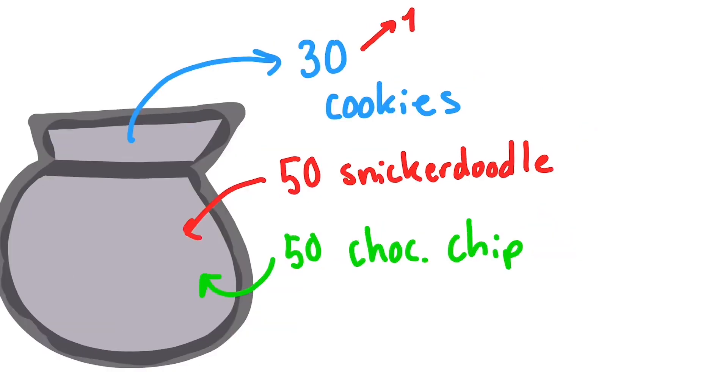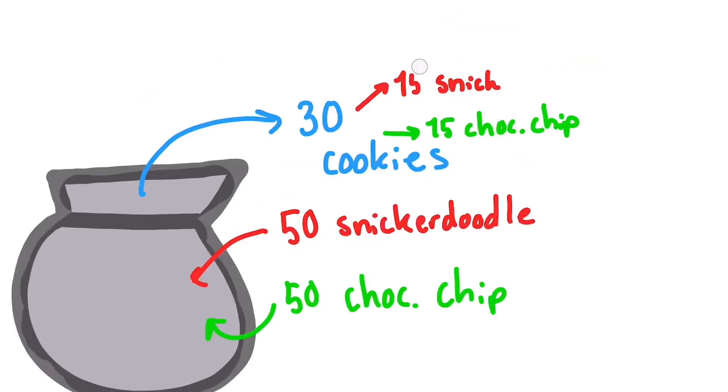Since around half of the cookies are chocolate chip, my friends expect that if they draw 30 cookies from the bag, around 15 should be chocolate chip. Of course, they could get unlucky and end up with 17 snickerdoodle cookies and only 13 chocolate chip cookies.